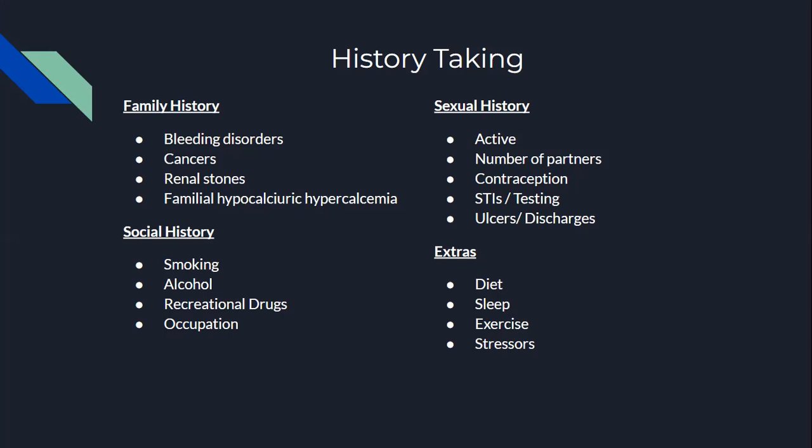Continuing with sexual history, ask if they are sexually active, how many partners they have, and if they are in a monogamous relationship. Are they using any contraception? Do they have any STIs? Have they tested positive for any STIs before, or do they get tested regularly? Ask the patient if they've noticed any recent ulcers or discharges within the genital region.